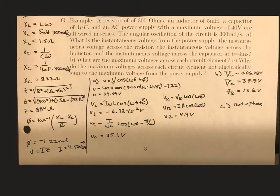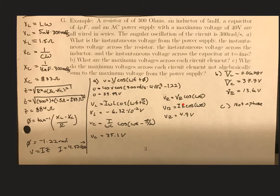Moving to the capacitor, we use the current we found, along with the angular oscillation and the capacitance, to find the voltage across the capacitor at 4 milliseconds. Finally, for the resistor, we know the current and the resistance, so we plug in the angular oscillation and t=4 milliseconds to get the voltage across the resistor at the 4-millisecond mark.